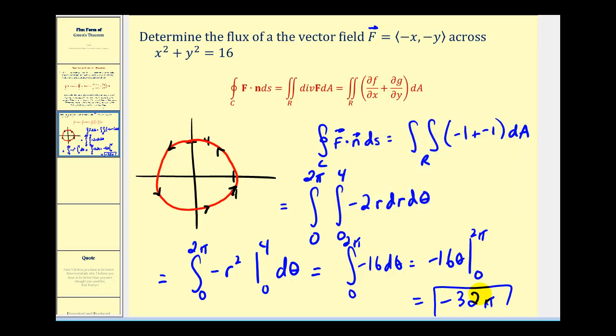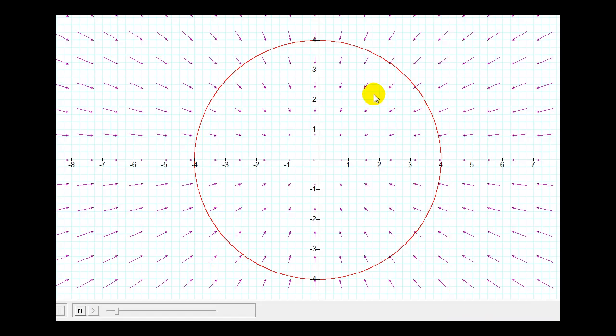And again, because the flux is negative, it does verify that our flow should be inward across this circle. And again, if it was positive, the flow would be outward.